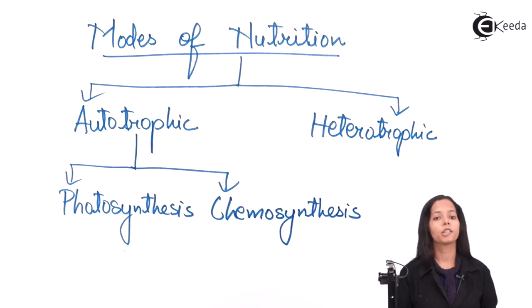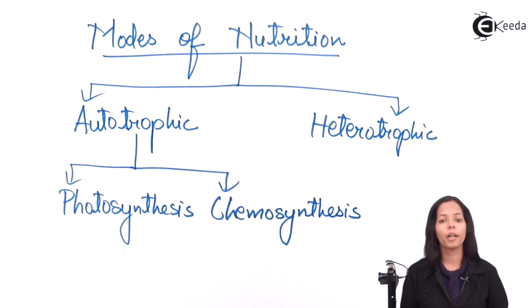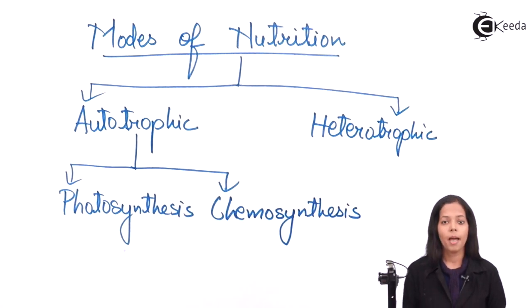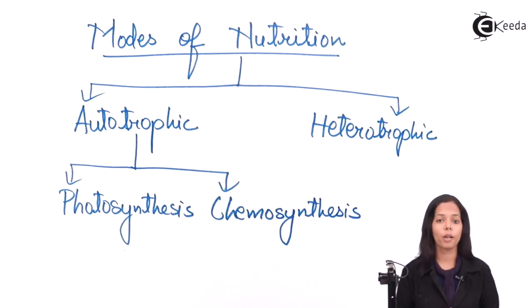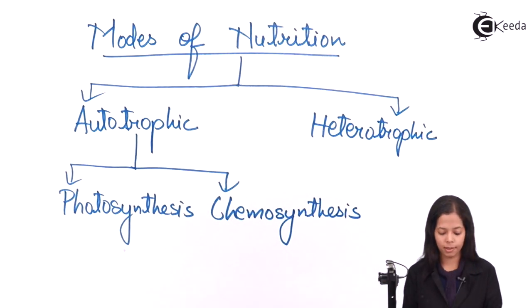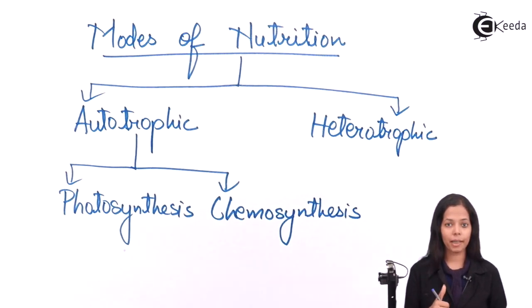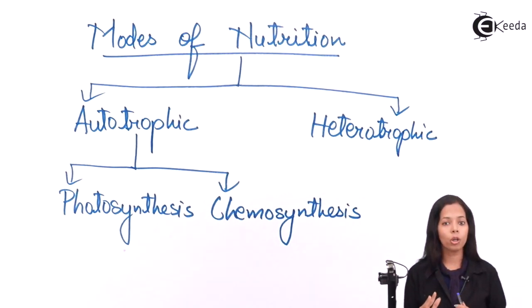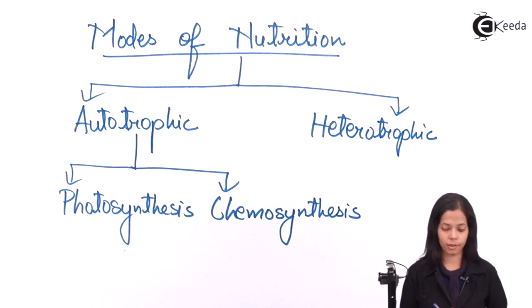Heterotrophic organisms can obtain their food by four means: parasitic, saprophytic, holozoic, and symbiosis.